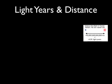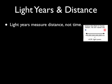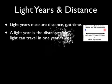Thinking about the speed of light and how long it takes to reach Earth, let's talk about light years and distances. Light years measure distance, not time — it's kind of weird since 'years' is in the word, and years usually measures time. However, in this case it does not. It measures distance. A light year is the distance that light can travel in one year.